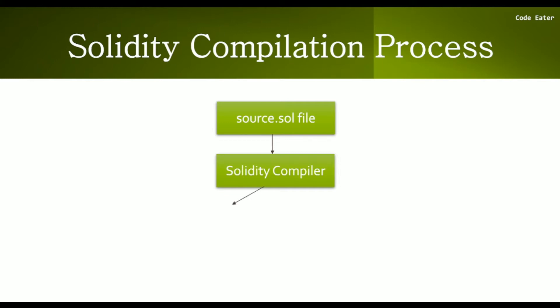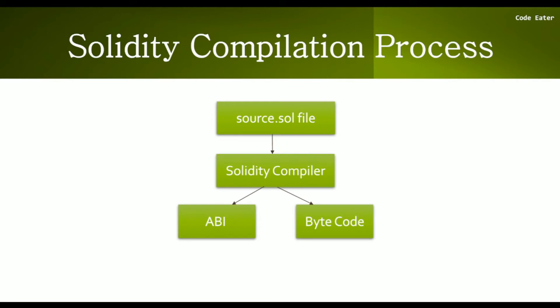When you give the source.sol file to the Solidity compiler, after compilation it generates two parts: first is the ABI and second is the bytecode. ABI stands for Application Binary Interface, and it acts as a bridge between your Solidity smart contract and the external world. For example, when creating a decentralized application you will have a front-end technology.